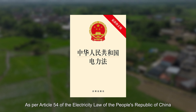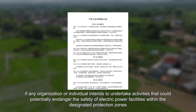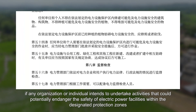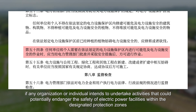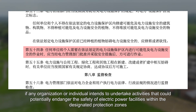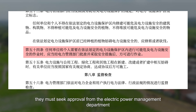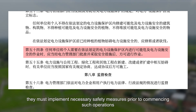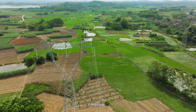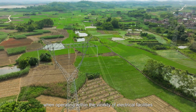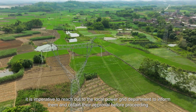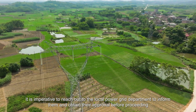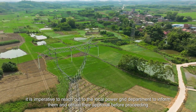As per Article 54 of the Electricity Law of the People's Republic of China, if any organization or individual intends to undertake activities that could potentially endanger the safety of electric power facilities within the designated protection zones, they must seek approval from the electric power management department and implement necessary safety measures. When operating near electrical facilities, it is imperative to contact the local power grid department for approval before proceeding.